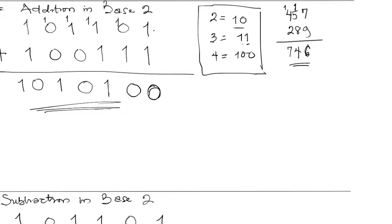Let's go over it one more time. 1 plus 1 is 2; 2 in base 2 is 10, so we write 0 and carry 1. 1 plus 0 plus 1 is 2; again 2 is 10, so write 0 and carry 1. 1 plus 1 plus 1 is 3; 3 in base 2 is 11, so write 1 and carry 1. 1 plus 1 is 2, write 0 and carry 1. 1 plus 0 is 1, no issues. 1 plus 1 is 2, write 10.